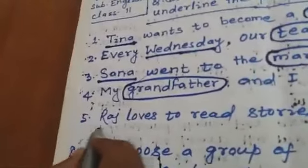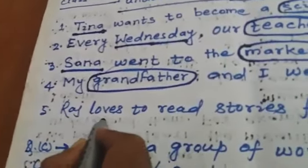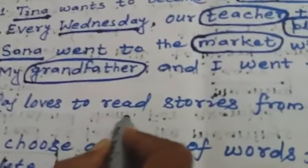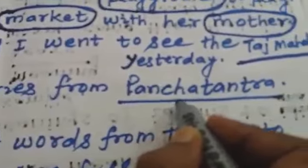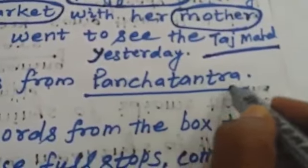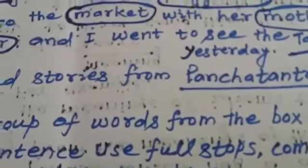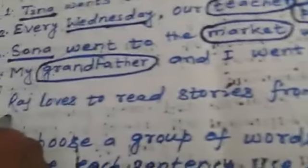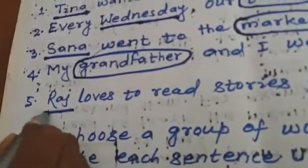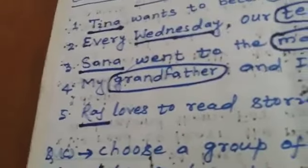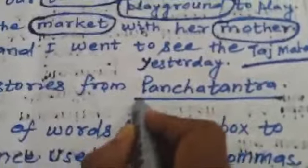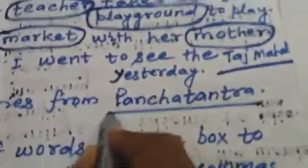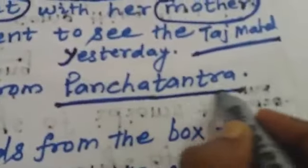Sentence 5: 'Raj loves to read a story from Panchtantra.' Here, 'Raj' is a proper noun — we underline it. 'Panchtantra' is also a proper noun — we underline it as well.